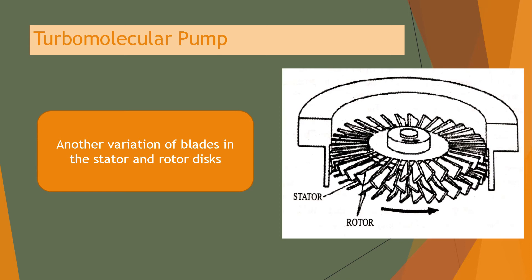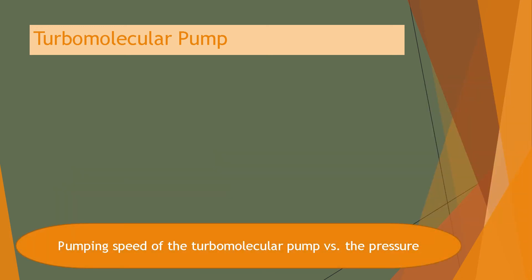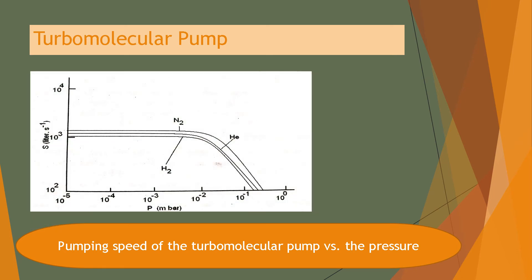A further variation of blade arrangements in the stator and rotor disc is shown in the figure. The pumping speed of the turbo molecular pump versus pressure is drawn in this graph. The pumping speed with respect to pressure is constant up to a particular pressure limit, after which the pumping speed decreases to a minimum.